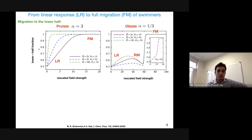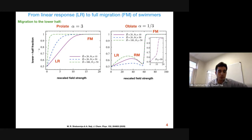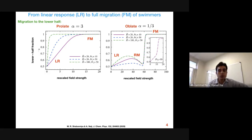For prolate swimmers, looking at the fraction of swimmers in the lower half of the channel, by increasing the strength of the field from zero we see a linear response — a linear rate of migration towards the lower half — until we reach full migration. However, for oblate swimmers we also have a linear response, but after a certain point there is a reverse migration, meaning that by increasing the field strength more and more swimmers end up in the upper half instead of the lower half, and then at a certain threshold all swimmers migrate to the lower half.